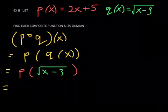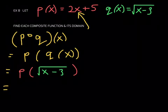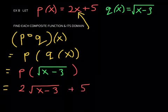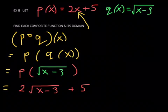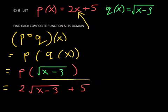This notation means we want to go to function p and plug in the expression — the square root of x minus 3 — into function p for the input variable. Replace that variable x with this radical expression, the square root of x minus 3. So that'll look like this: two times the square root of x minus 3, plus 5. This is as far as you can go. You cannot distribute the 2 inside the radical — you can never do that. You cannot add the 2 and the 5 together because they are not like terms. 5 is a constant term and 2 is being multiplied by this radical, so fight any temptation to simplify this. You are done.